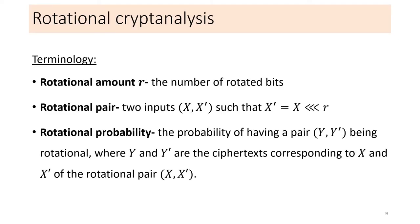Before explaining the rotational technique, I will first introduce some terminology. We call a rotational amount error the number of bits that are shifted and rotated. A pair of two inputs is called rotational if one is a rotation of the other with some fixed rotational amount. And finally, rotational probability refers to the probability of having the corresponding outputs after some operations of a rotational pair being also rotational.